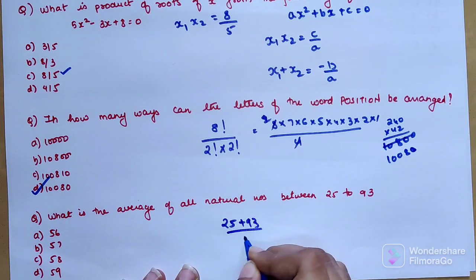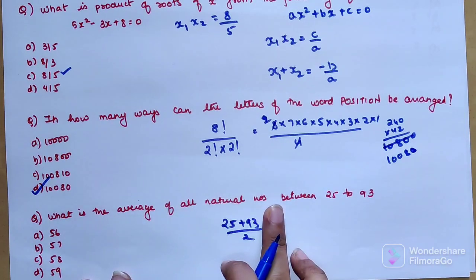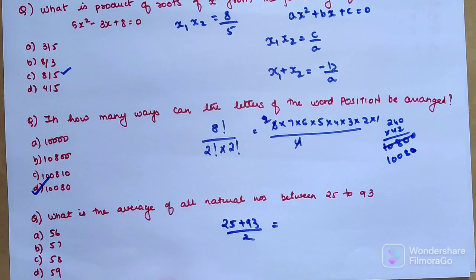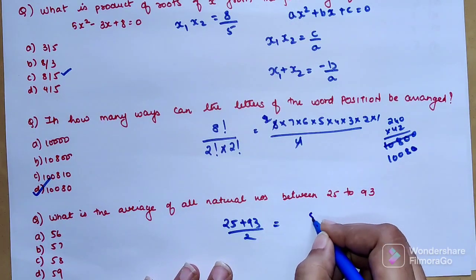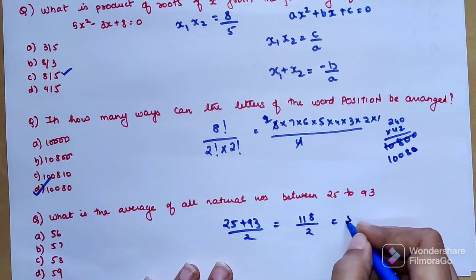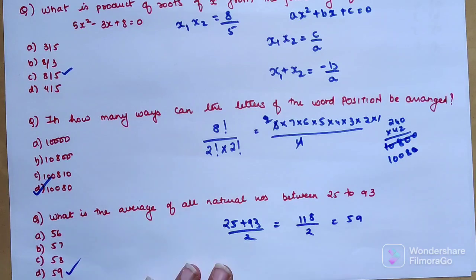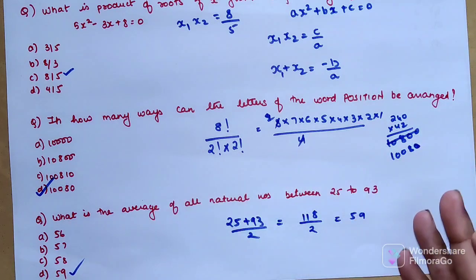We have 25 and 93. All you have to do is 25 + 93 divided by 2. Why? They are all natural numbers, so the difference in the arithmetic progression will be 1. In that case, I just add first term and last term, then divide by 2. I get 118 ÷ 2 = 59. My average is 59.